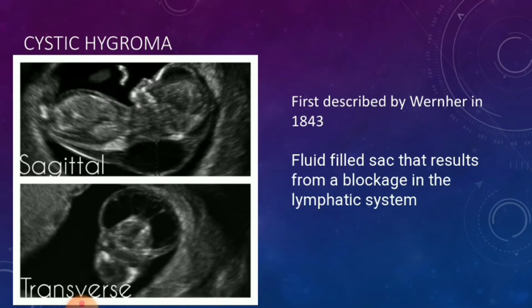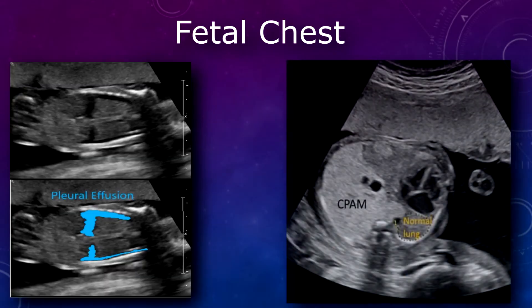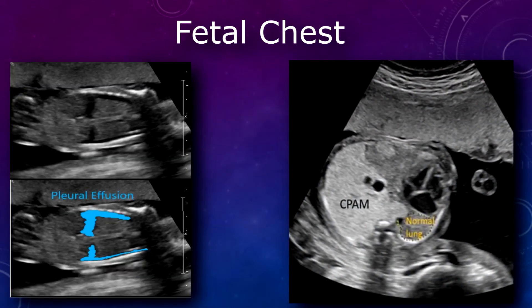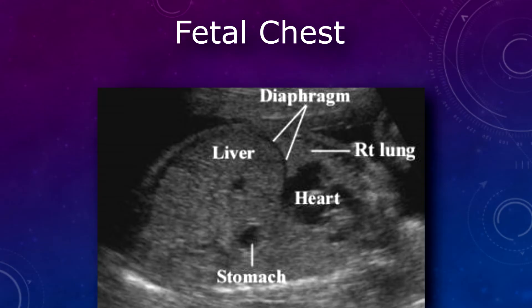From here, you may travel down into the chest. In the chest, you'll be able to see the fetal lungs, which are echogenic bilaterally. This is a good spot to rule out things like pleural effusion, cystic adenomatoid malformation, or pulmonary hypoplasia. In the coronal view, you may see the diaphragm and check for fetal breathing, and also rule out things like diaphragmatic hernia.